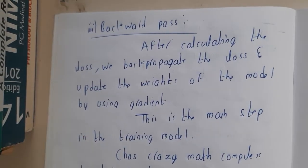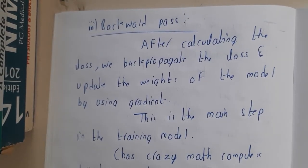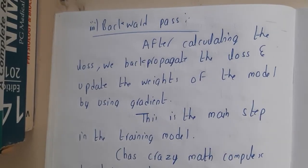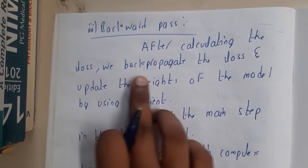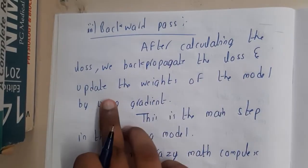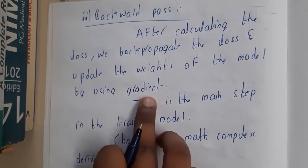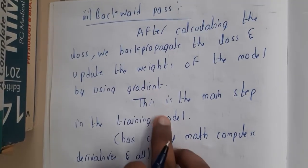The last step: we calculated the error, right? Based on that error, you need to do some modifications. The modification phase is the backpropagation phase. After calculating the loss, we backtrack the loss and update the weights of the model by using the gradient. This is